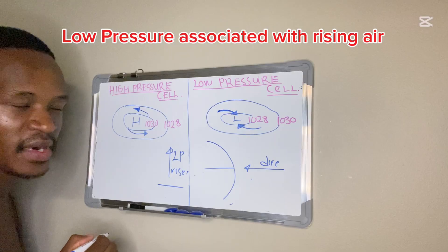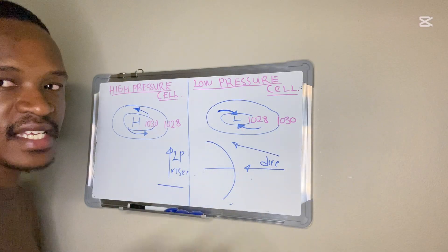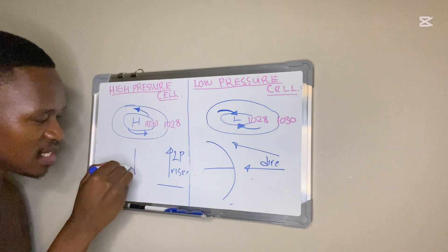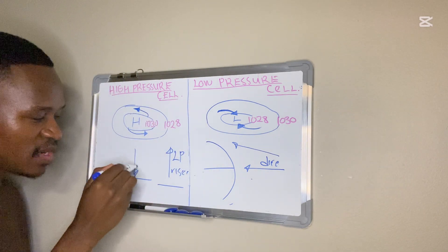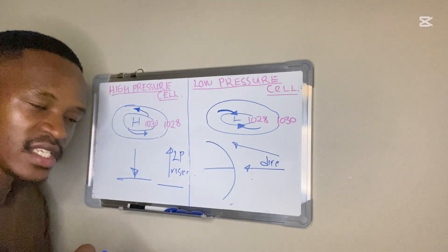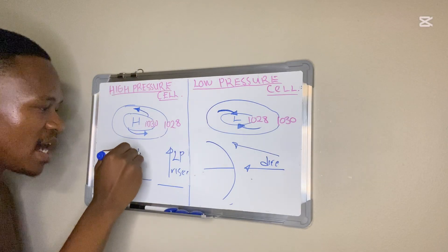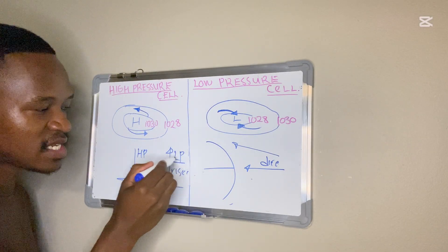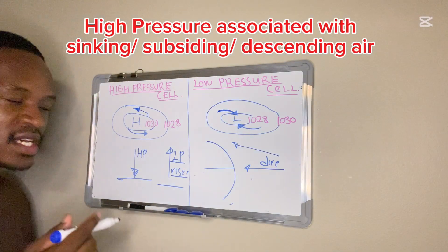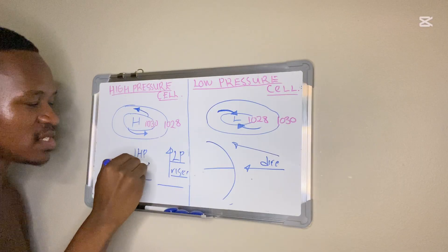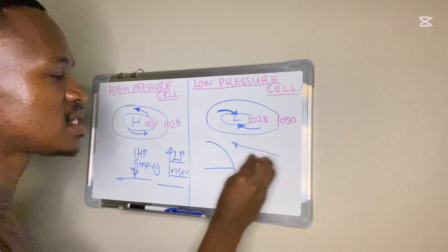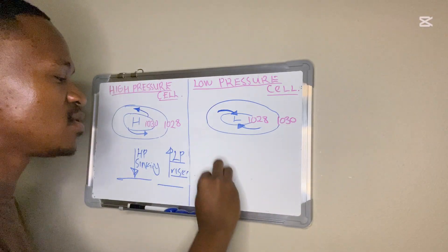Towards the poles we are receiving indirect sunlight, hence we have cold dry air which sinks. When air sinks it exerts more force or more pressure on the surface, hence we have high pressure. So low pressure is associated with rising air, but high pressure is associated with sinking or subsiding air — both forming as a result of the unequal heating of the atmosphere.